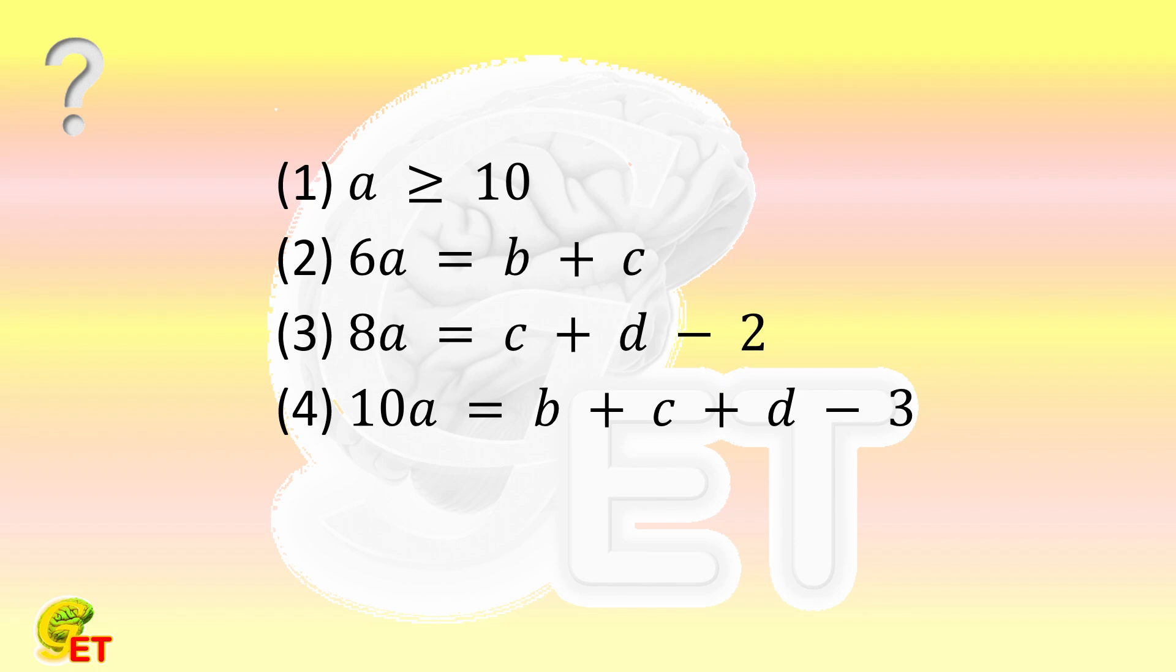With four known conditions, the task is to find the minimum value of A times B times C times D. This is a real question in a mathematical competition. In fact, its difficulty is at most at the 8th grade level. But guess where it appeared? In the 11th grade competition. So intuitively, everyone can make it easily, right?